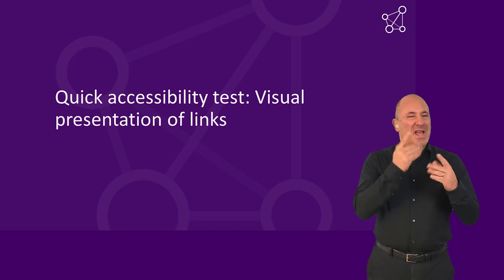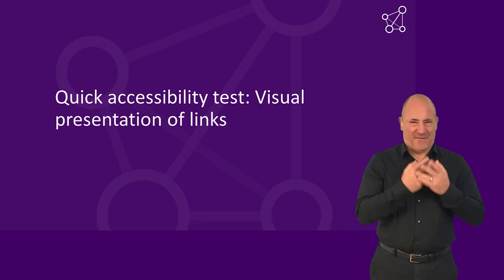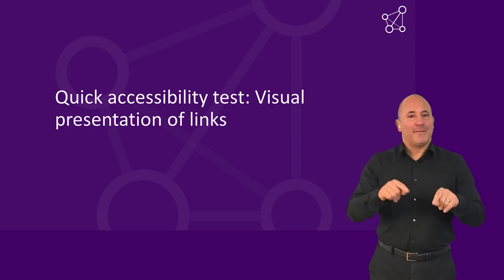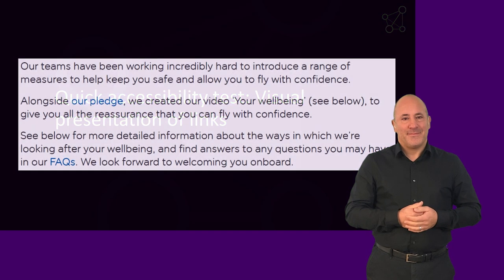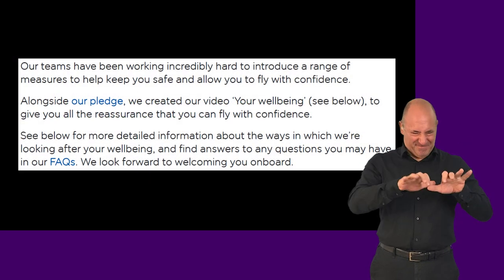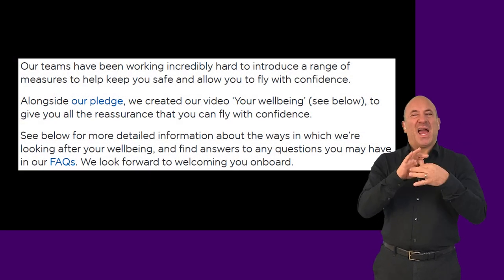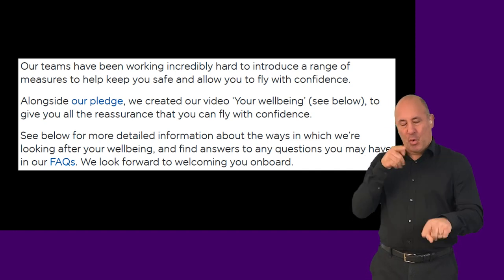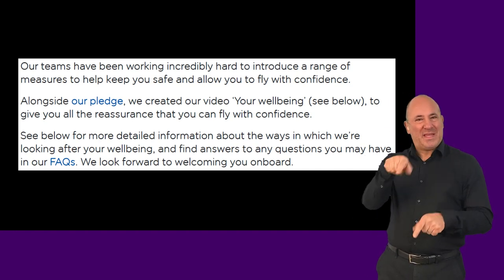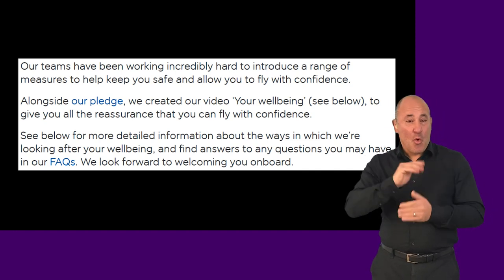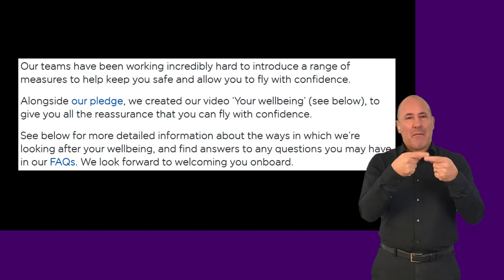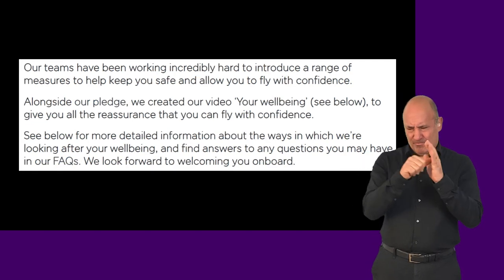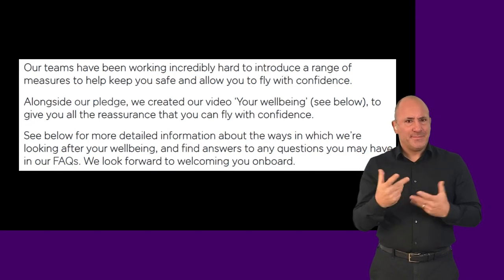Quick Accessibility Test: Visual Presentation of Links. Links are often displayed in a different color from static text so that people can recognize them. However, not all people can perceive differences in color. Some have visual disabilities that impact color perception.